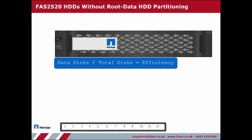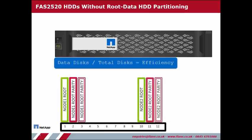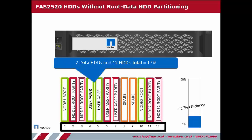Here we have 12 internal disks, with 6 used for node 1 and 2 boot partitions, 2 for hot spare, with the remainder utilized as a single aggregate. To calculate the efficiency, we divide the number of data disks by the total number of internal disks. Based on this configuration, we are operating on an efficiency rating of approximately 17%, and only a very small proportion of each of the internal disks are in use.